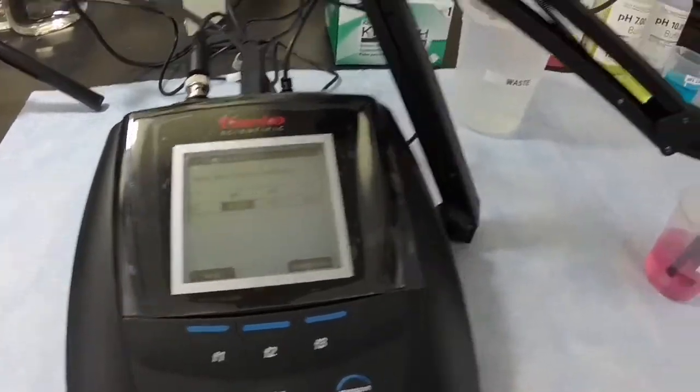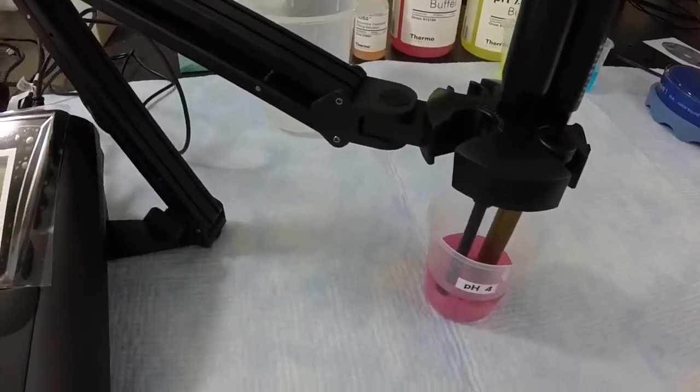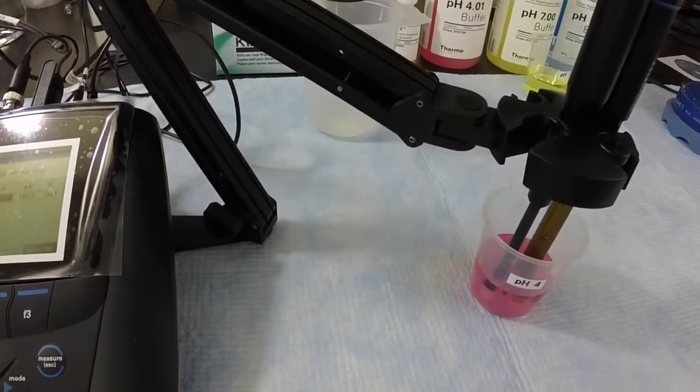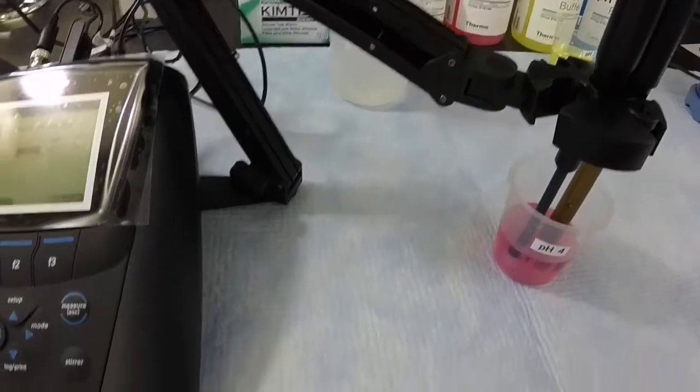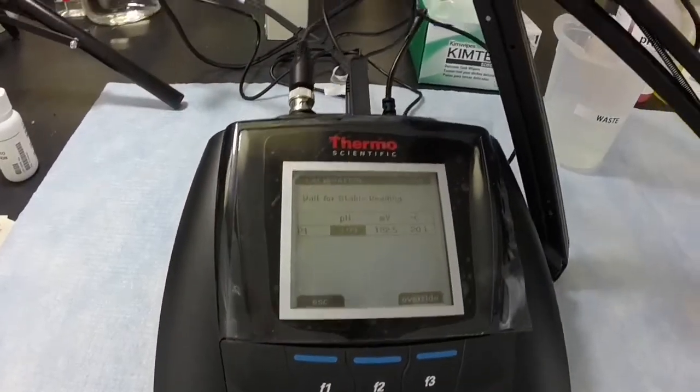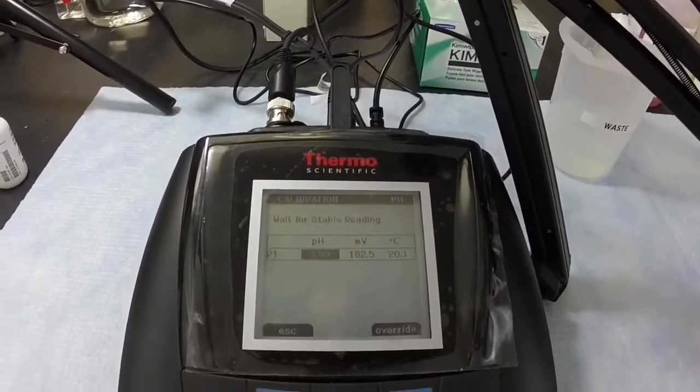When using the mechanical stirrer, stirring will start automatically. If using a stir bar and a magnetic stirrer, start the stirring manually now. The pH reading will blink on the meter display until a stable reading is reached. When it is stable, it will stop blinking.